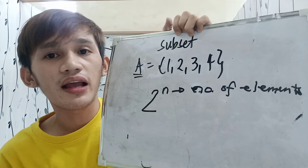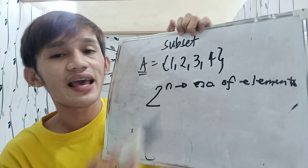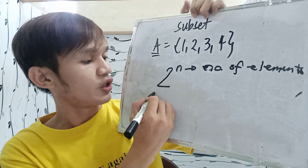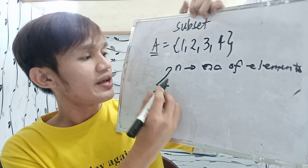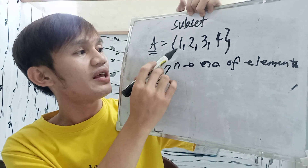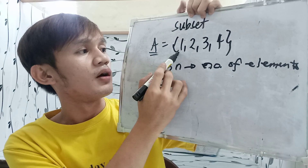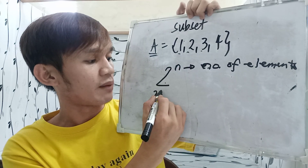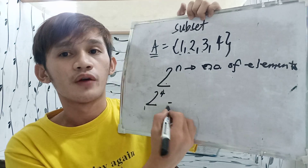N is the number of elements. For SET A, we have elements 1, 2, 3, and 4 — so we have 2 raised to 4.